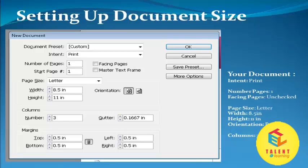Select the document preset as custom or default. In intent, select print or web. Select the number of pages, start page, and tick mark facing page or master text frame. Then select page size, width and height, and set orientation as portrait or landscape. Then enter the number of columns and margins — top, bottom, left, right.